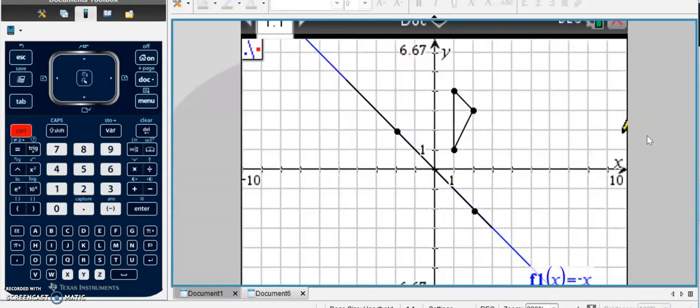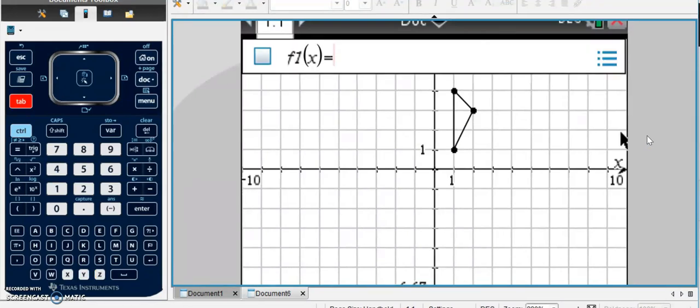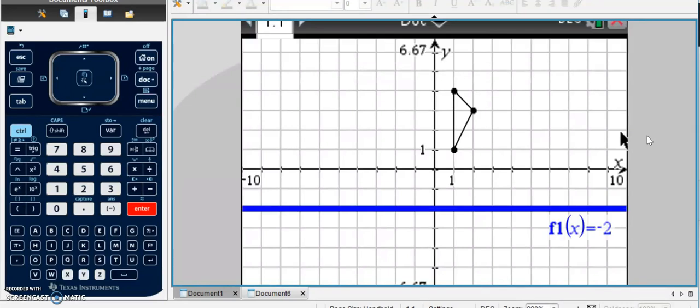I can do something similar with a horizontal line. So for instance, if I wanted to graph Y equals negative 2 to see where that went, then I could construct a line on top of it and select that line as the line of reflection.